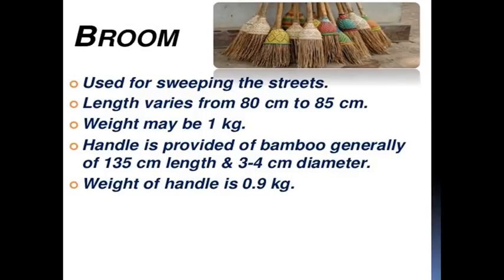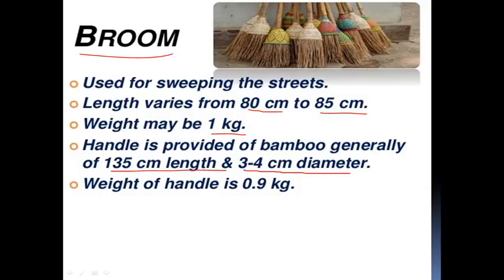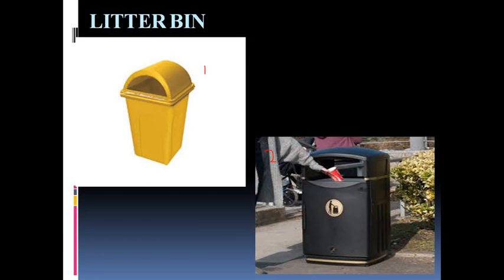Next is the broom — used for sweeping streets. Length varies from 80 cm to 85 cm, and weight may be around 1 kg. The handle is generally made of bamboo, 135 cm in length and 3 to 4 cm in diameter, with handle weight of 0.9 kg. Workers sweep the streets using the broom and collect waste into the litter bin.